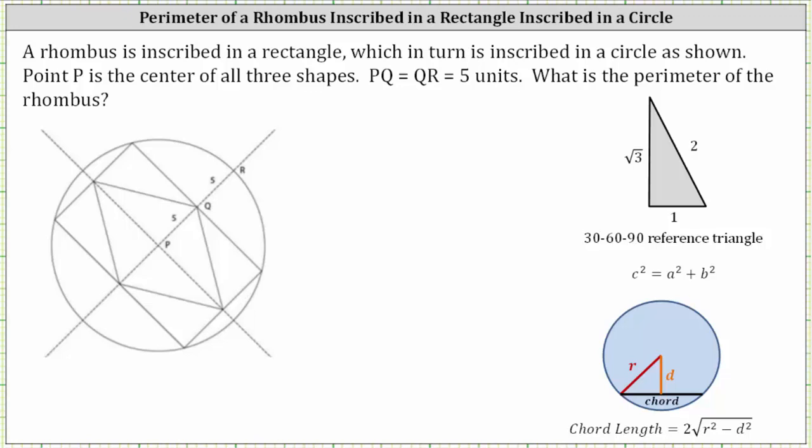A rhombus is inscribed in a rectangle, which in turn is inscribed in a circle as shown. Point P is the center of all three shapes. The length of segment PQ equals the length of segment QR, which is equal to five units. What is the perimeter of the rhombus?